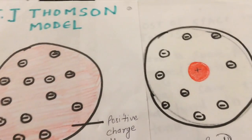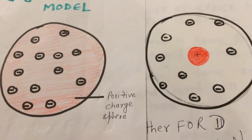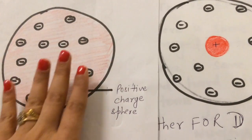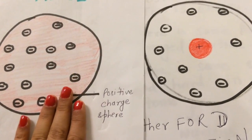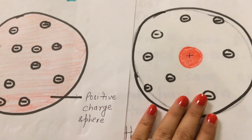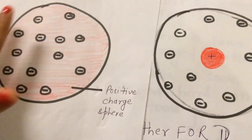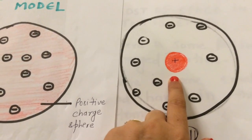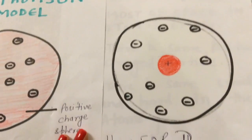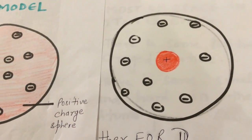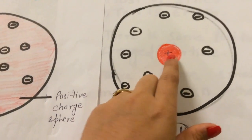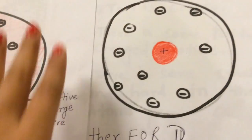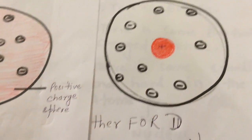Comparing the JJ Thomson model with Rutherford's experiment: according to JJ Thomson, all the positive charge is spread throughout the sphere of the atom. But after the scattering experiment, Rutherford found that the positive charge is not spread throughout the atom — it is concentrated in the center. So the main conclusions are that an atom has a positively charged body called the nucleus at the center, and nearly all the mass of the atom resides in that nucleus.